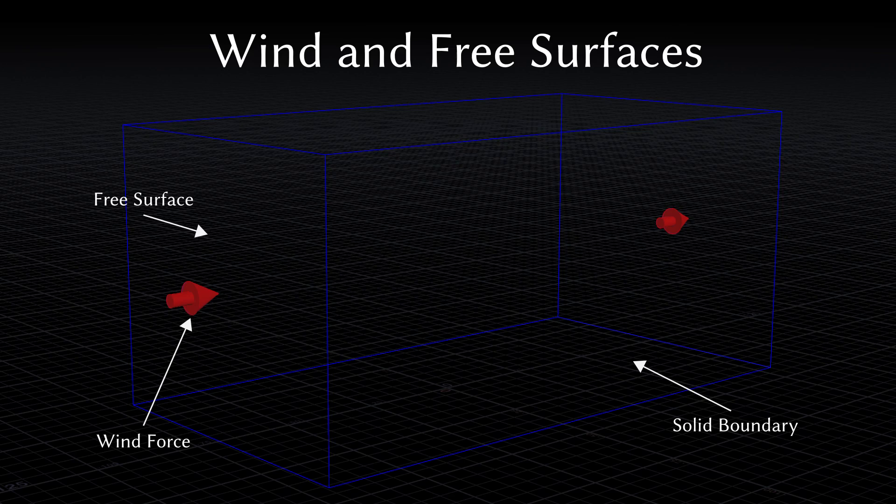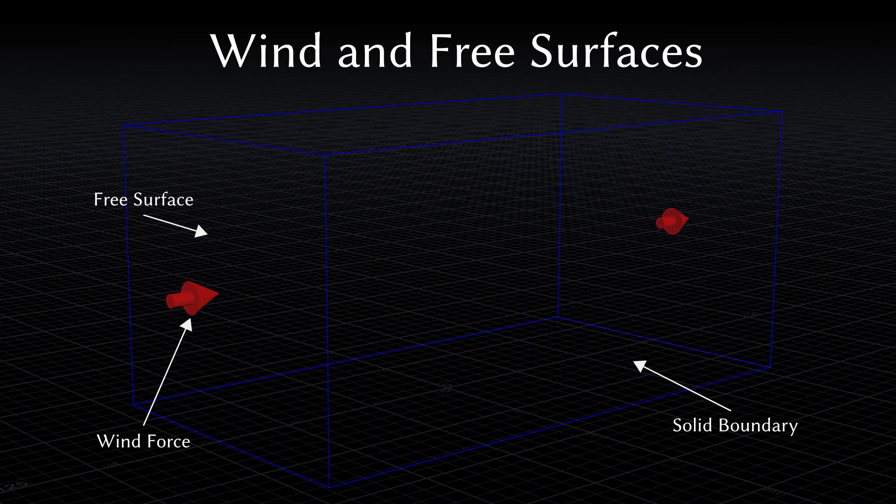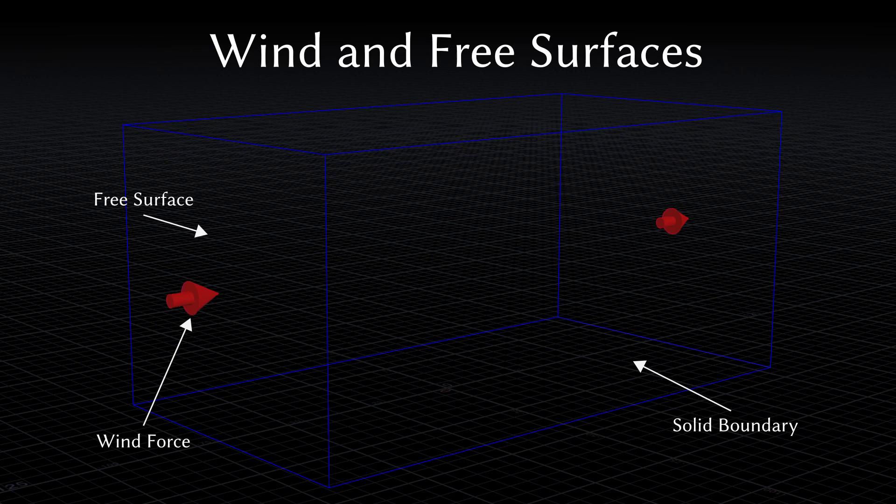Our simulation takes place in a dense domain instead of a sparse one. Each side of the domain can be defined as either a solid boundary or a free surface, where free surfaces can be coupled with a wind force to simulate the interaction of the environment on our finite simulated domain.